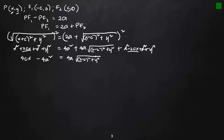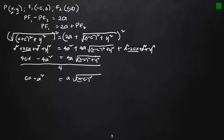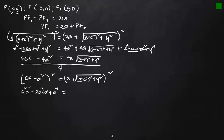Now squaring both sides again to remove the remaining radical sign, the left side gives c²x² − 2a²cx + a⁴, and the right side gives a² times [(x − c)² + y²], which expands to a²x² − 2a²cx + a²c² + a²y².